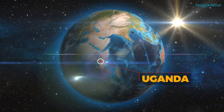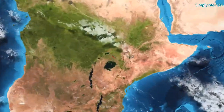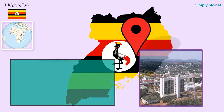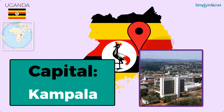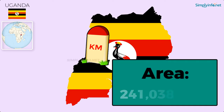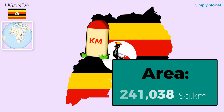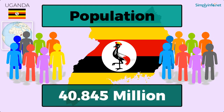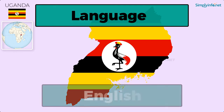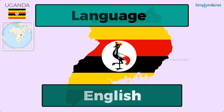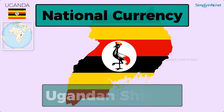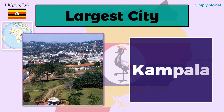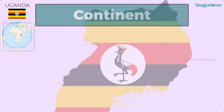Name: Uganda. Official Name: Republic of Uganda. Capital: Kampala. Area: 241,038 square kilometers. Population: As of 2018, it is 40.854 million. Language: English. National Currency: Ugandan Shilling. Largest city: Kampala. Continent: Africa.